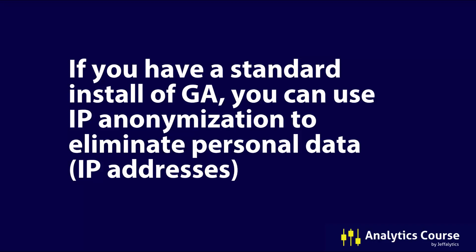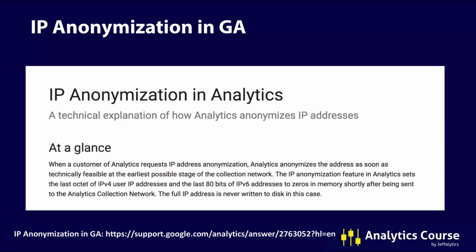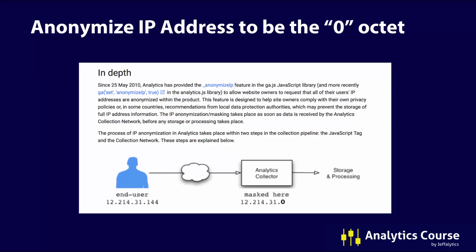In simple terms, if you have the standard version of Google Analytics, the personal data in a standard install is not very much, and you can use IP anonymization to eliminate it. You can anonymize people's IP addresses — the one piece of personal data collected — using a simple function. Here's an article directly from Google that explains how this function works. This picture from Google's support documentation shows that if a user's IP address is 12.214.31.144, setting the fourth set of digits — the octet — to zero anonymizes the IP so you can no longer track that individual. Simply turn on the IP anonymization feature inside Google Analytics, and you are no longer collecting personal information on that person.